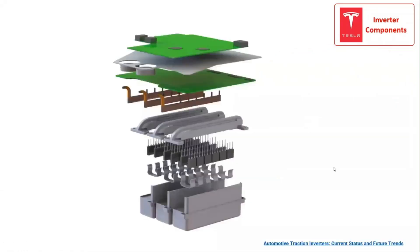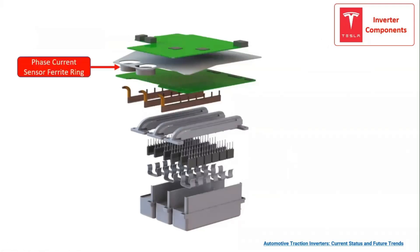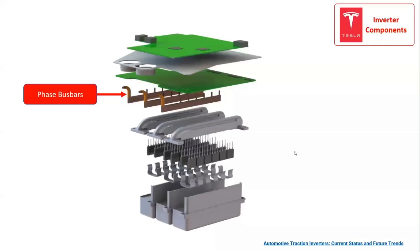The inverter structure of the Tesla Model S is shown in three dimensions. On the topmost layer of the inverter structure, we have the control board, which coordinates the flow of voltage and current in the inverter topology. After the control board, we have an aluminium shield that separates the control board from the phase current sensor ferrite ring. Afterwards, we have the gate driver board, which consists of the gate driver IC circuitry for switching the IGBTs in the inverter topology. Then, the phase bus bars that connect the IGBTs to the PCB, which contains the gate driver board.